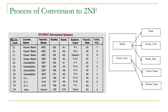Now let us discuss total R. Total R is dependent on the combination of course code and roll number. For one course code we get multiple values of total R, and for a given roll number like 101 we also get different values of total R. So total R is not dependent on course code alone or roll number alone — it is dependent on the combination of course code and roll number.